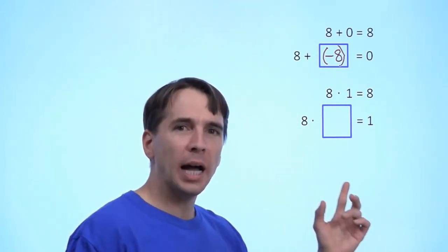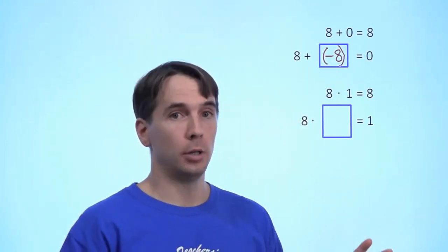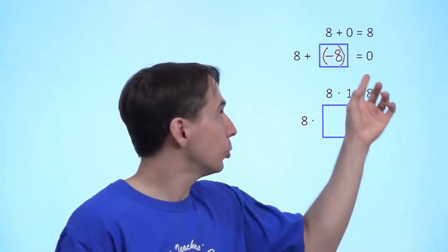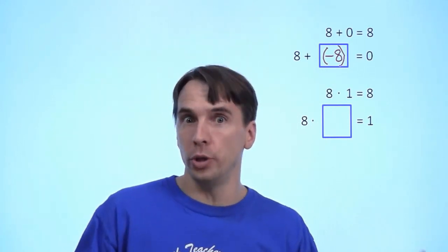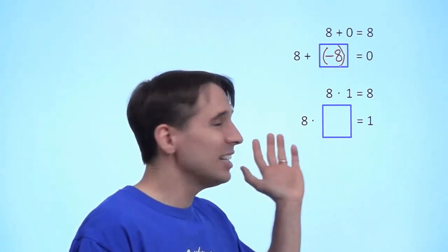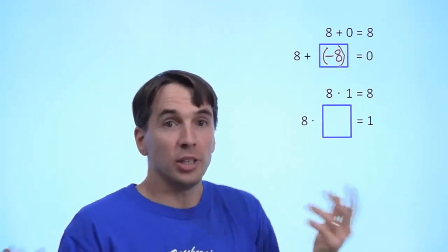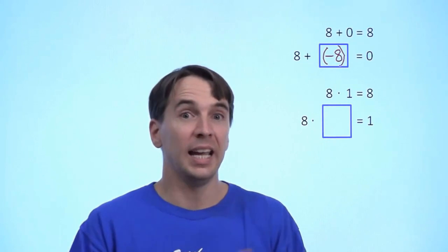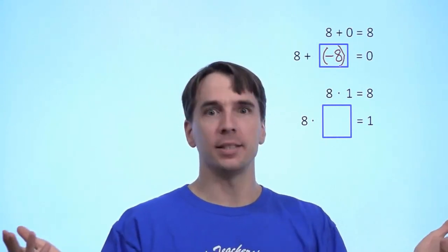Now, what do I multiply 8 by in order to get back to 1? Well, for addition we had to make up a whole new number to figure out 8 plus what equals the identity 0. Down here in multiplication, we're going to do the same thing — make up a whole new number, because that's sometimes what we do in math. We certainly can't put any integers in here: 8 times 0 is 0, 8 times 1 is 8, 8 times 2 or 3 are all higher than 1, and 8 times a negative number is a negative number. So we need a new kind of number. We are going to make it up and see what happens.